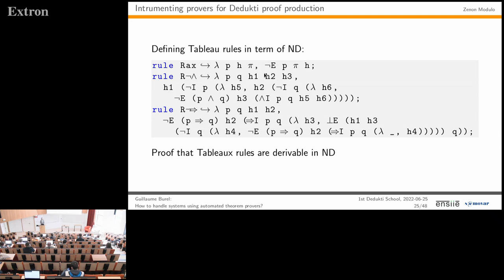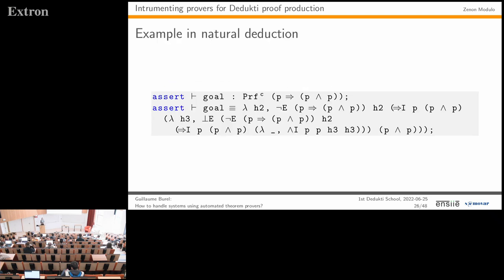The rules of tableau are derivable in natural deduction with a classical logic axiom. On our example, after this first step the proof becomes convertible to a term where natural deduction introduction and elimination rules appear—the implication introduction and conjunction introduction rules, for instance. But this is not enough; we want to go even shallower by reducing natural deduction directly into the first-order logic encoding of Dedukti.